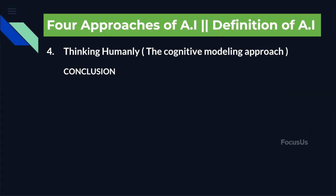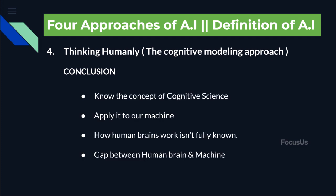To conclude thinking humanly: to make a machine or computer system think humanly, we first need to understand cognitive science, then apply it to our machine. But the problem is we still don't know how the human brain works, so there lies a huge gap between the human brain and a machine.